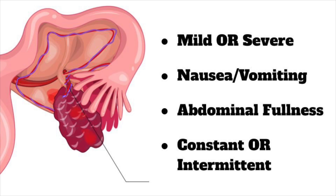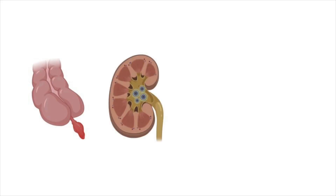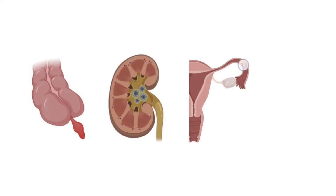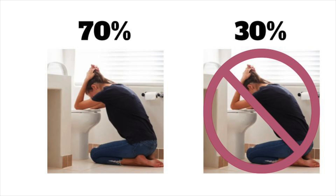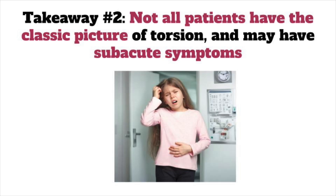Even more of a problem, ovarian torsion can mimic other conditions like appendicitis, kidney stones, ectopic pregnancy, and colitis. While up to 70% of patients have nausea and vomiting, this leaves 30% of patients without these issues. The key takeaway is that not all patients have the classic picture of ovarian torsion and may have more subacute symptoms.